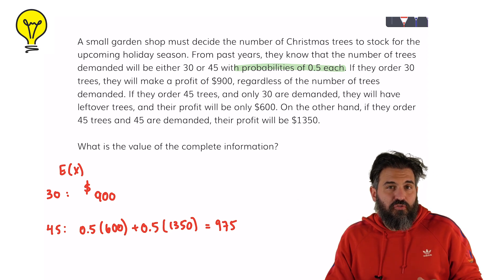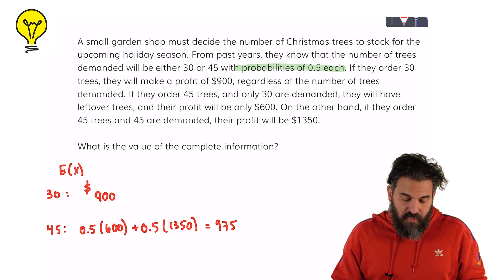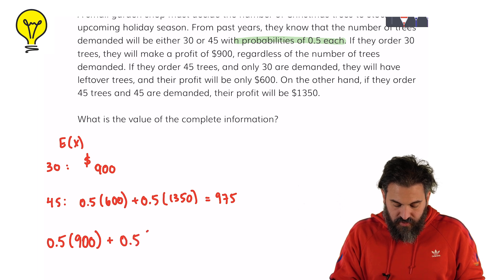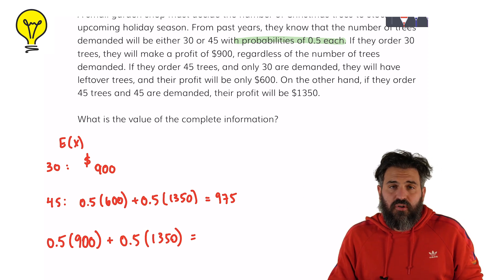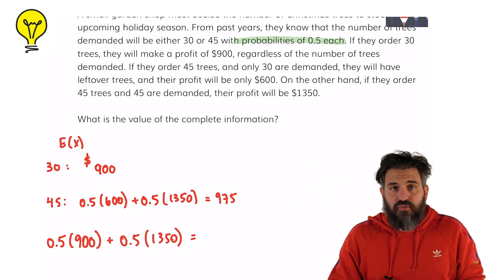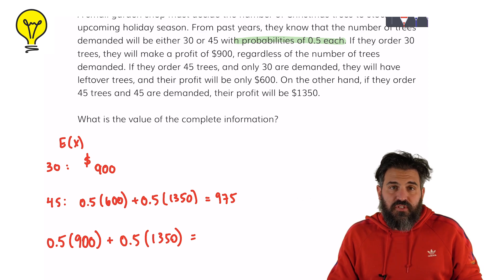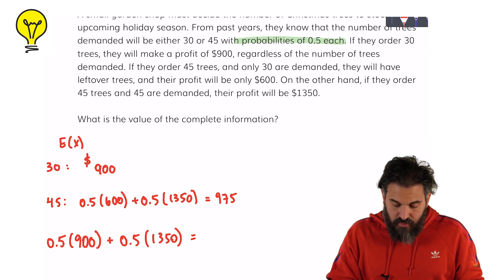Now what if we were able to know for sure how much demand there would be? Then we would know exactly how many trees to order. The expected return in that case would be 50% times $900 plus 50% times $1,350, and I'll explain why. If we know that only 30 trees will be demanded then we'll only order 30 trees. If we know that 45 trees will be demanded then we'll order 45 trees. So by knowing exactly what the demand will be we're removing the uncertainty — there's a 50% chance we make $900 and a 50% chance we make $1,350. That is an expected return of $1,125.